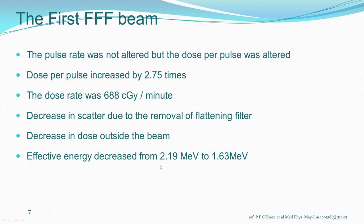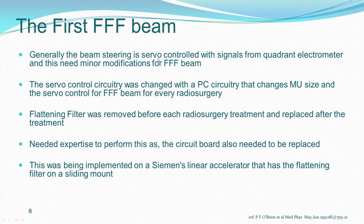There was decreased scatter and decreased dose outside the beam due to removal of the flattening filter. The effective energy decreased from 2.19 MeV to 1.63 MeV for a 6 MV photon beam, due to lack of beam hardening. Beam steering is servo-controlled with signals from the quadrant electrometer, and this needed minor modifications for the Triple F beam — two electronic changes: the servo control circuitry and the PC circuitry for dose per MU. This needed expertise and was somewhat time-consuming.